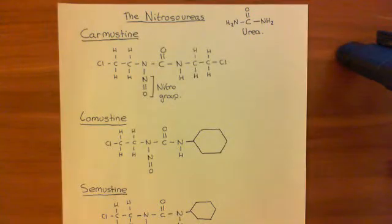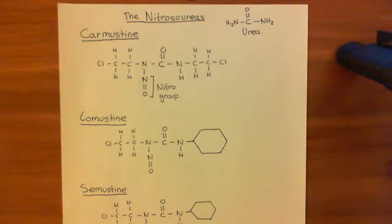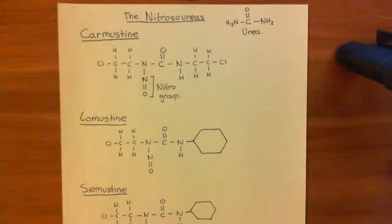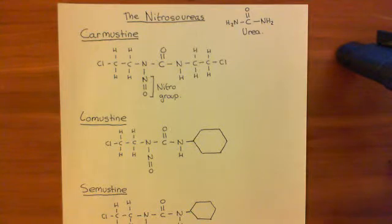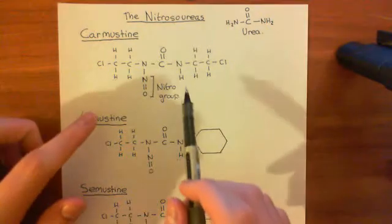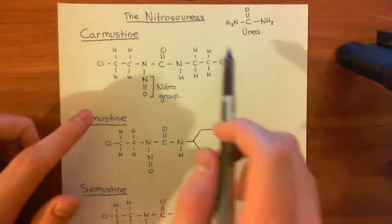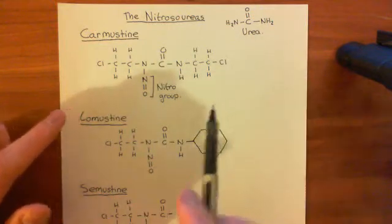Welcome to this next video in which we're discussing the use of the nitrosoureas as anti-cancer chemotherapeutics. We've seen four examples of nitrosourea drugs now: carmustine, lomustine, semustine, and streptozotocin. What we now want to look at is their mechanism of action, and we'll concentrate on our example carmustine.